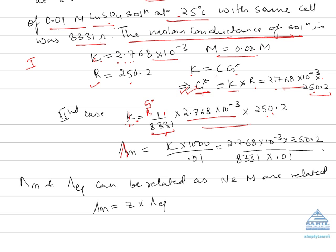After finding kappa, we use it to calculate the molar conductance of the copper sulfate solution. Molar conductance equals kappa times 1000 over M. The molarity of copper sulfate is 0.01, so we substitute this into the formula and calculate the value of molar conductance.